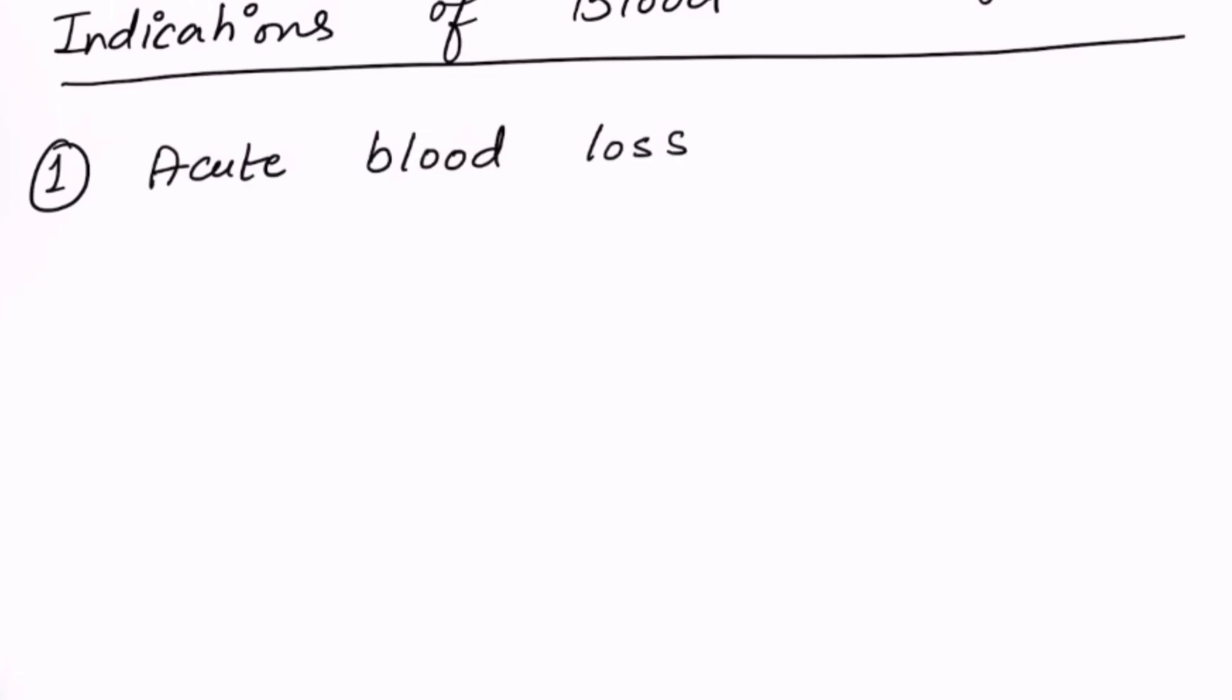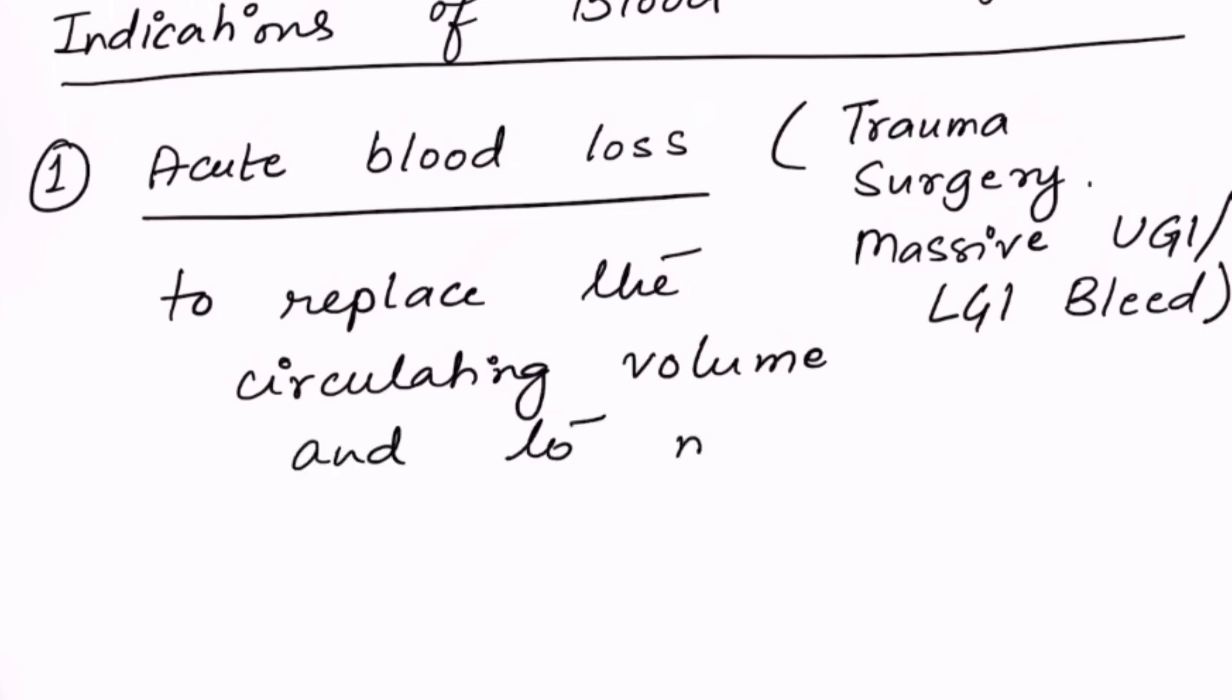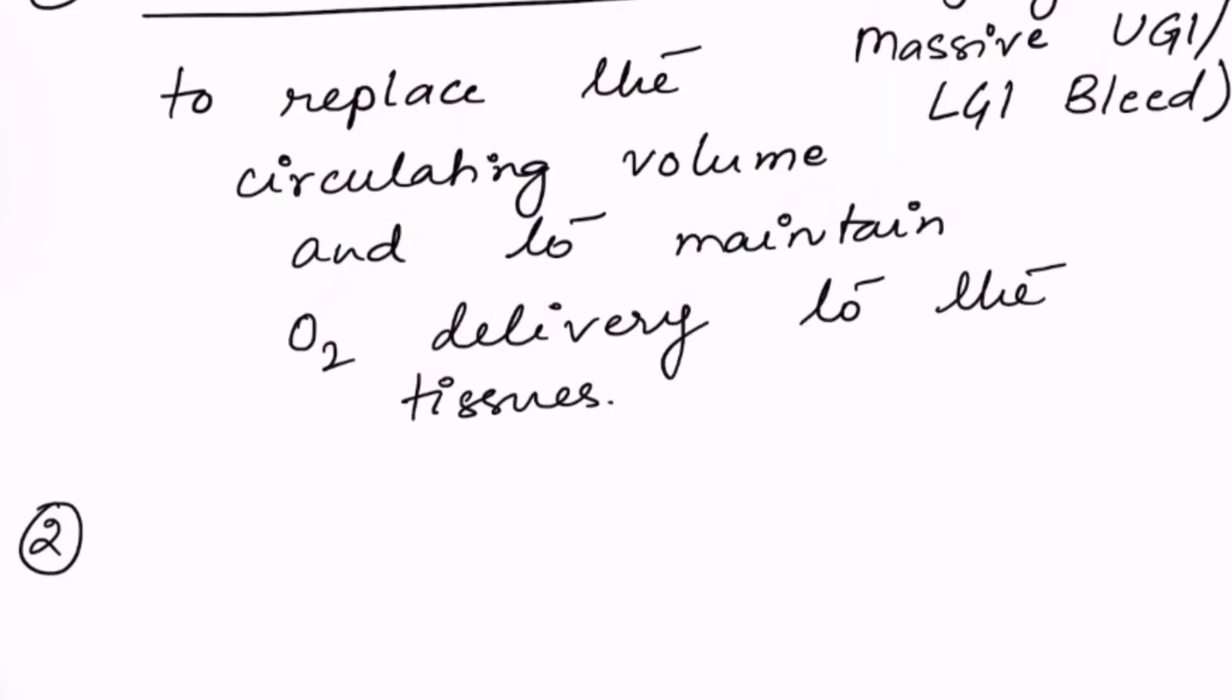First, when there is acute blood loss from the body. This can be due to trauma, surgery, or massive upper or lower GI bleeds. In case of acute blood loss, we are giving blood to the patient to replace the circulatory volume which has been lost and also to maintain the oxygen delivery to the tissues for proper functioning.